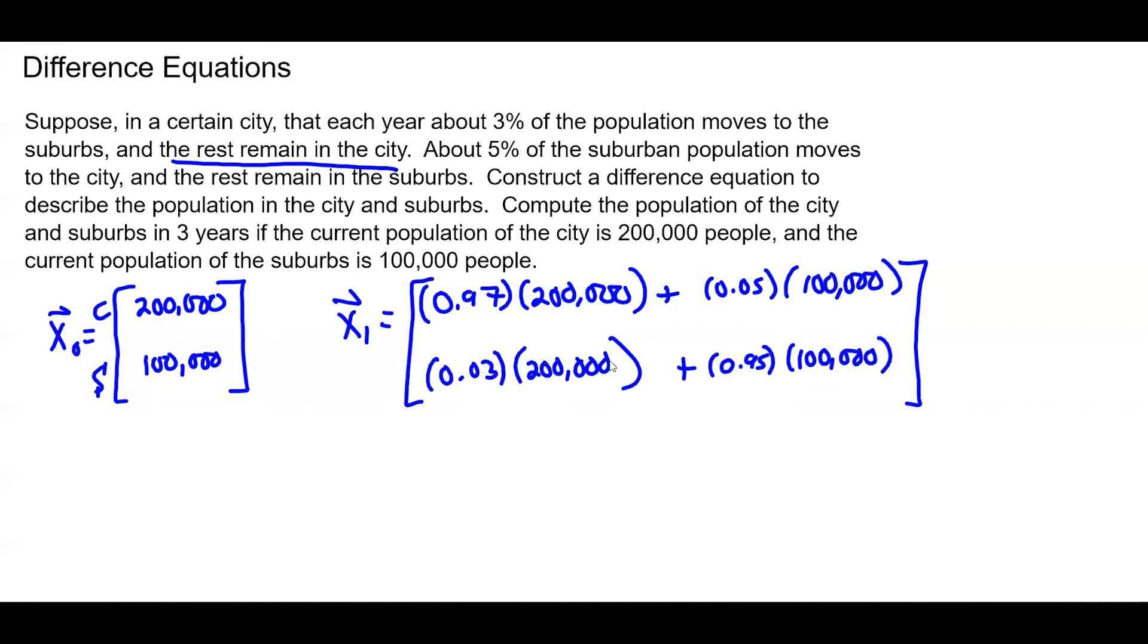And what you can see here is this X1 is, these are linear combinations. I can write this as a matrix times a vector. If we think about this dot product multiplication here, it's 0.97 times 200,000 and 0.05 times 100,000. That's what I wrote here.